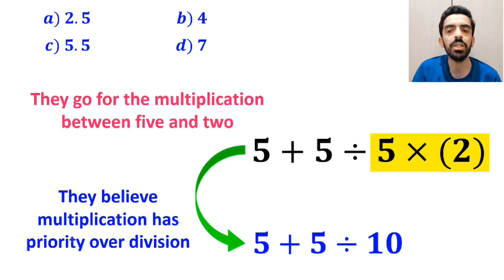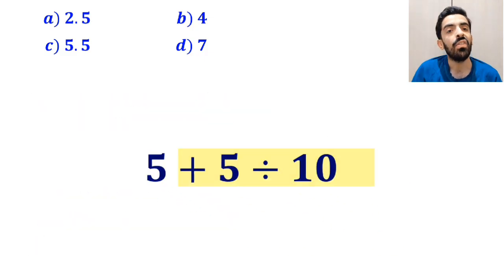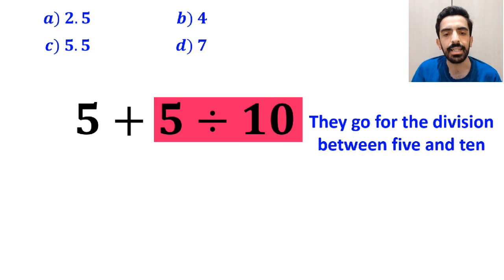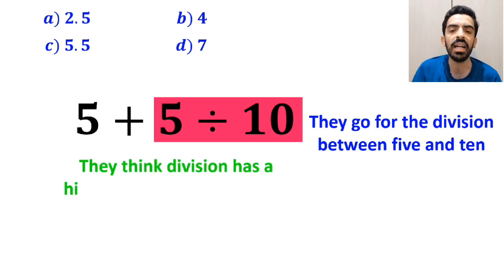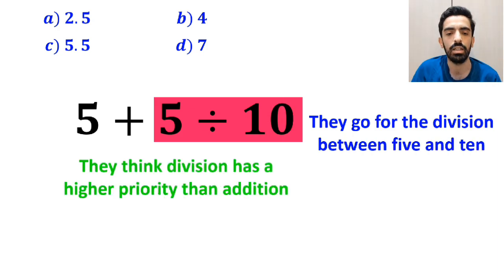So, this expression simplifies to 5 plus 5, then divide it by 10. Then, they go for the division between 5 and 10, because they think division has a higher priority than addition.